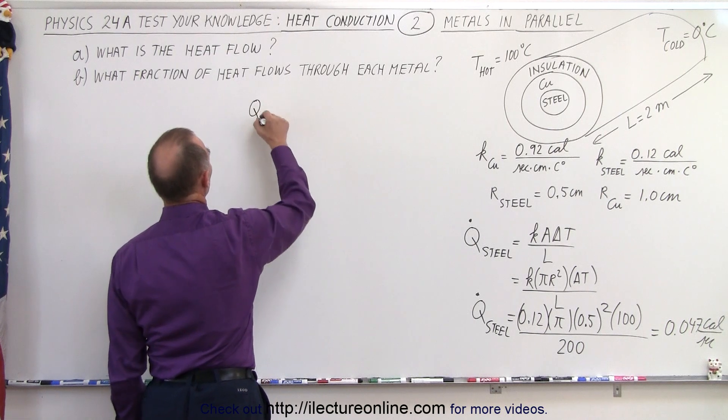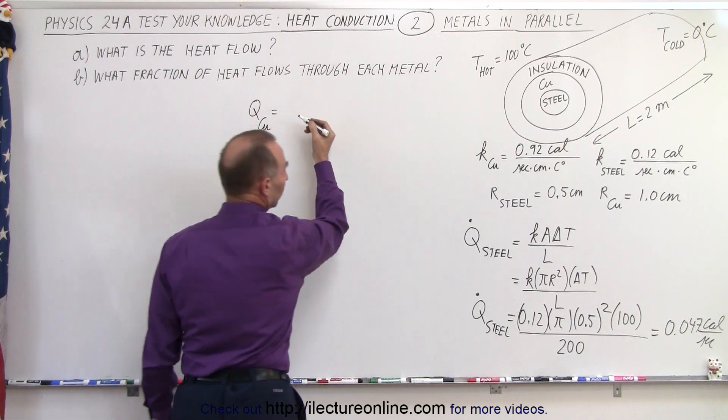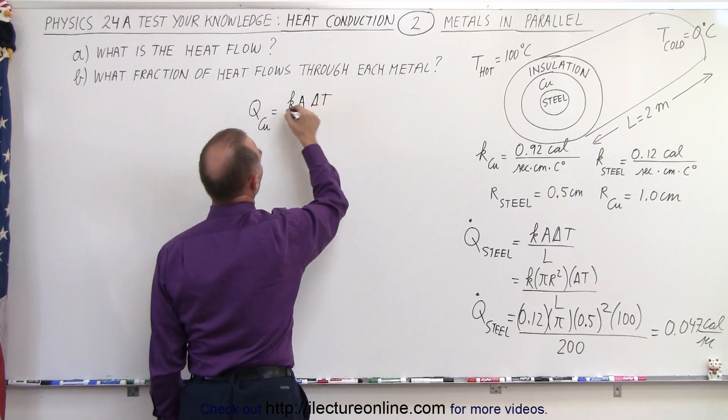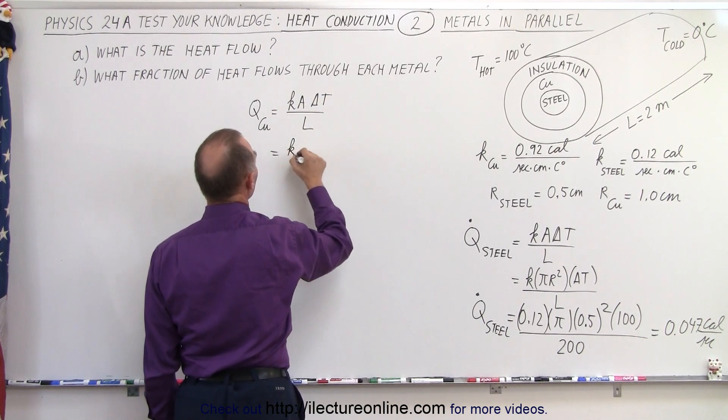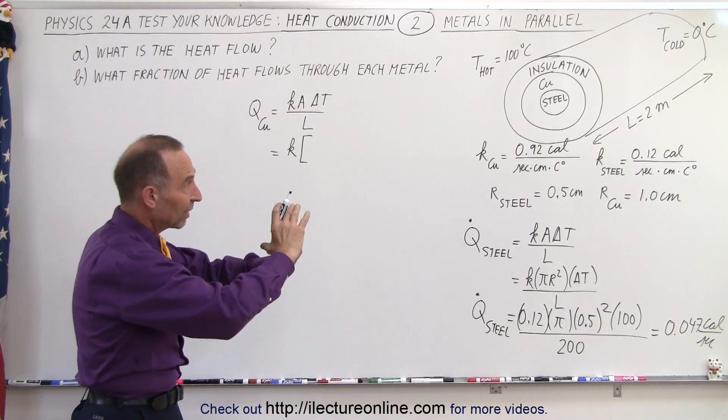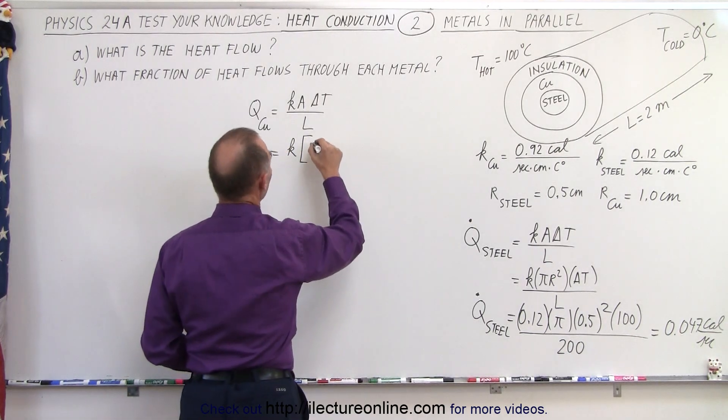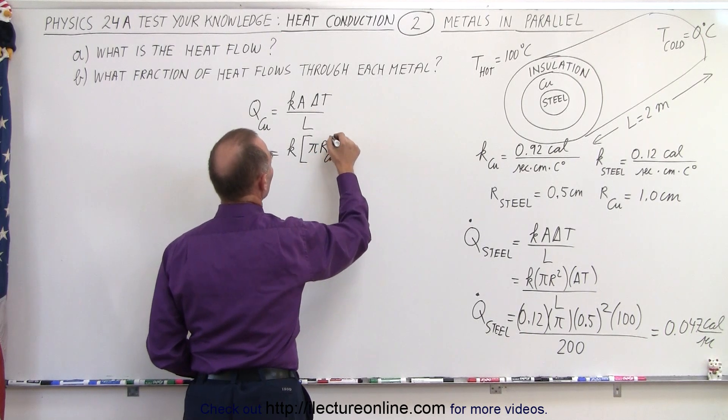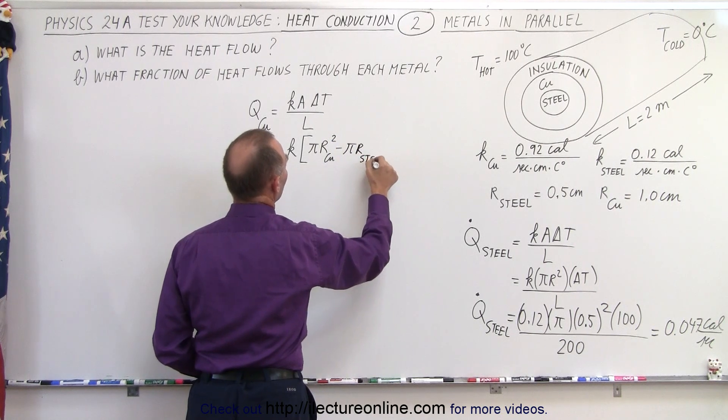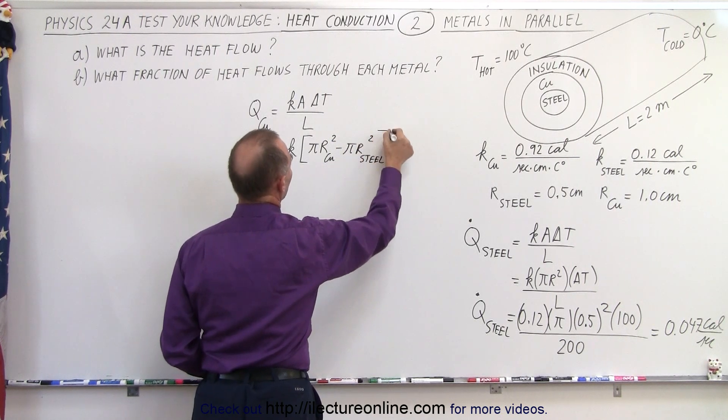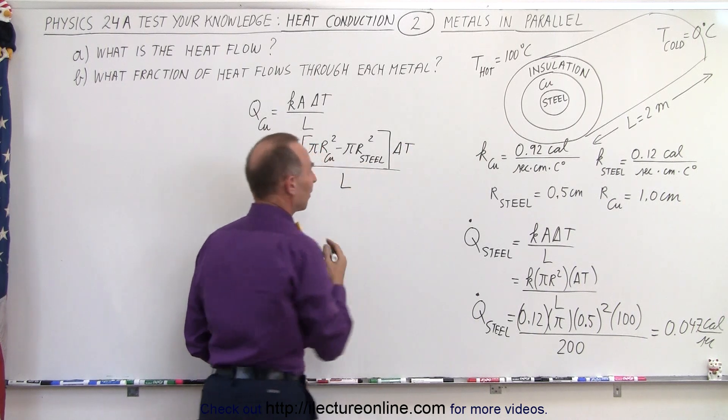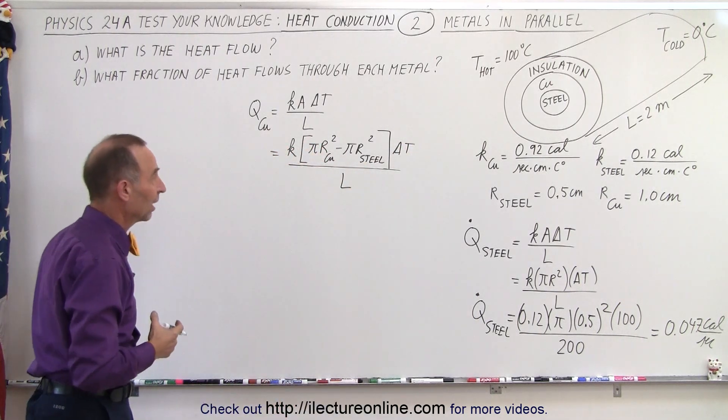We do the same for copper. Q for copper is equal to K times the cross-sectional area times delta t divided by the length. Now that will be equal to K times, now the cross-sectional area will be the total area minus the area of the steel. That would be pi times r of the copper squared minus pi times r of the steel squared times the delta t divided by the length. And of course, everything will be in terms of centimeters and calories.